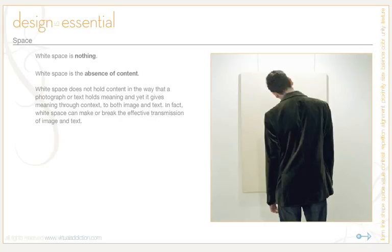Space is often referred to as white space, but it doesn't have to be white. It can be blue, yellow, or even pink. White space is really referring to a place for the eyes to rest, for the design to breathe, for elbow room. It helps in relieving tension.